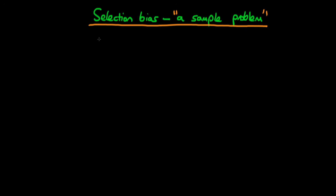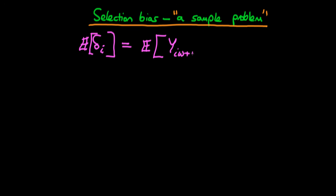The idea is that, in general, what we're interested in estimating is the average causal effect. That's the expectation of δᵢ, which represents the difference in potential levels of some outcome variable — the expectation of Y if an individual chooses treatment W+1, and how that differs from if that individual chose W. So what we're interested in is the difference between these two potential levels of outcome.